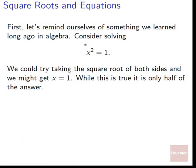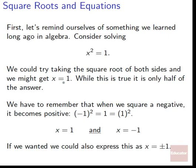First let's remind ourselves of something we learned long ago in algebra. Consider solving x² = 1. Our first knee-jerk response would be to take the square root of both sides and get x = 1, but we have to remember that's only half of the answer. When we take the square root of both sides, we have to also introduce a plus and a negative version — the plus or minus symbol — since negative 1 squared and 1 squared both equal 1, giving x = ±1.